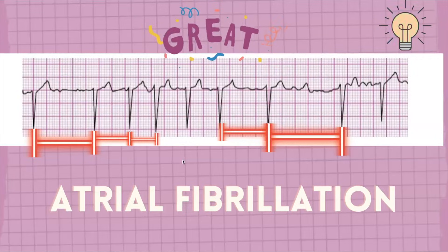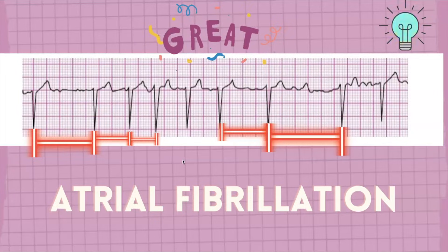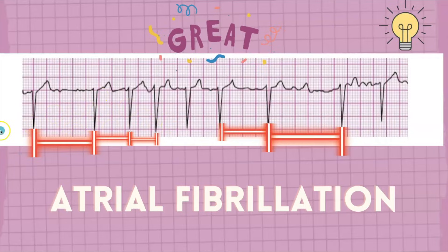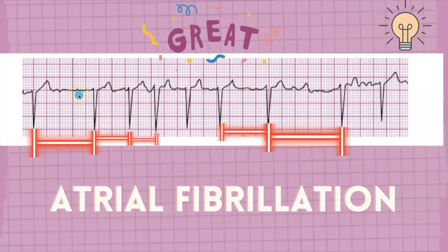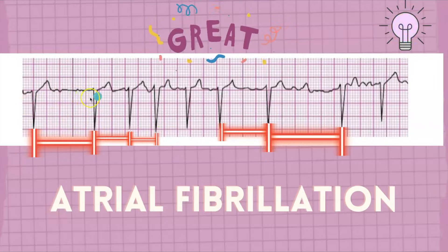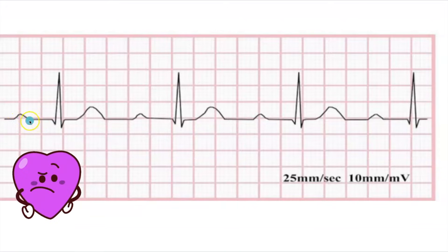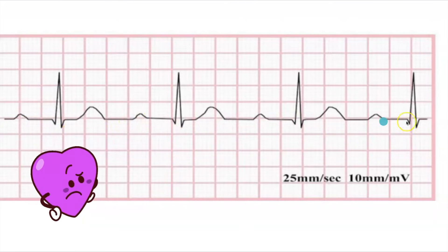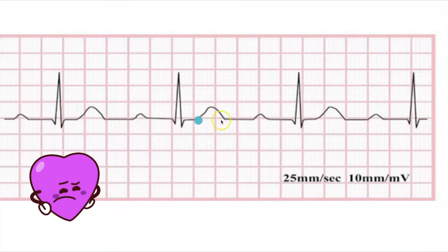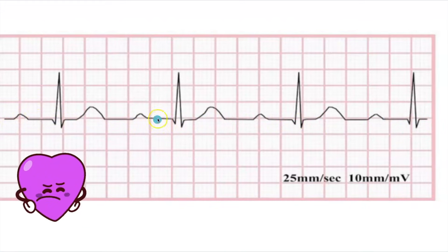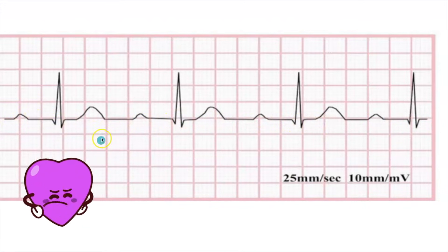With AFib there are no distinct P waves — it's chaotic. The rhythm is irregularly irregular. The P waves are irregular and the QRS is irregular — the QRS complexes aren't happening at the same length, and neither are the P waves; they're all over the place. Remember that with AFib the atria are quivering. For ACLS you don't need to take out your calipers — just eyeballing it, you can identify this rhythm.